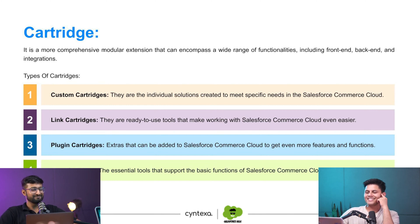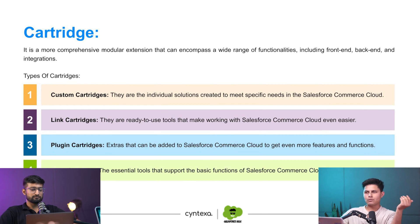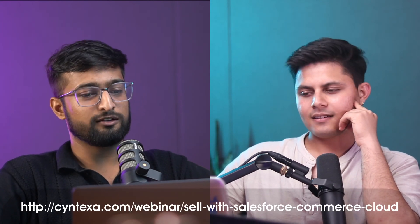Then come link cartridges. Link cartridges are basically pre-built features and tools that help you do something on Salesforce Commerce Cloud which is not available by default. For example, we have a cartridge listed on AppExchange — the Arch Merchant Tool — which basically provides a marketplace for users. It allows you to convert your Salesforce Commerce Cloud into an Amazon-like platform where you can add multiple vendors, let them create their own product listings, and sell their merchandise or services on your e-commerce website. Everything is on an approval basis, so you control everything.